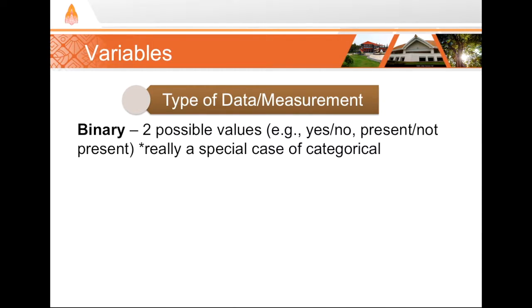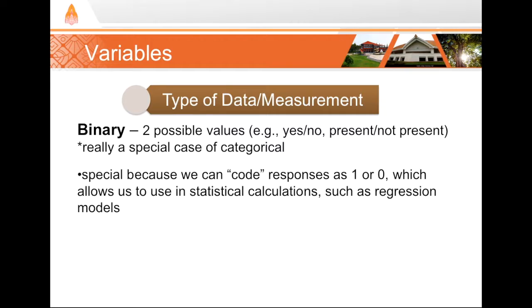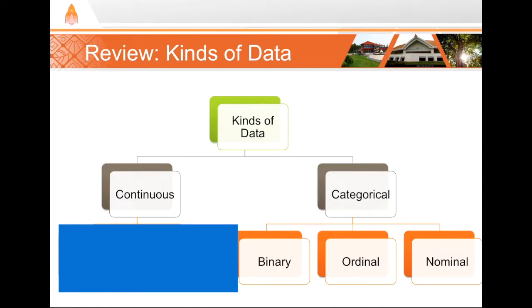A special kind of categorical data is binary data. In binary data, we have only two choices that are possible. For example, do you have a dog? Yes or no? Binary is special because we can code responses as 1 or 0, which allows us to use them in certain statistical models. For example, we can perform linear regression on certain variables among dog owners and non-dog owners. So, remember, categorical can be ordinal, nominal, or binary.